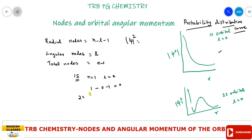For the 2s orbital, what is the number of nodes? For the 2s orbital, n is equal to 2 and l is equal to 0. So the number of radial nodes is 2 minus 0 minus 1, which equals 1. So the number of radial nodes for the 2s orbital is 1.